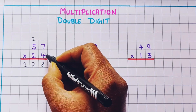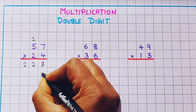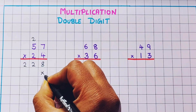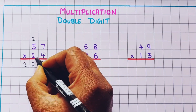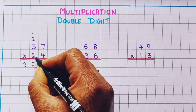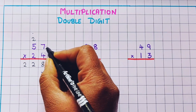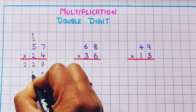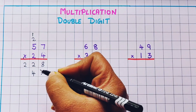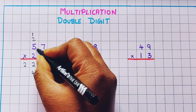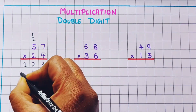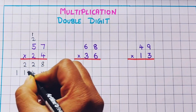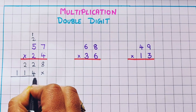Now this number is done, so below that number I'm going to give a cross mark — we are not going to use this place. Now we start multiplication with 2. 2 sevens are 14, so I'll write 1 and here 4. Now 2 fives are 10, plus 1 is 11, so here I will write 1 and 1.